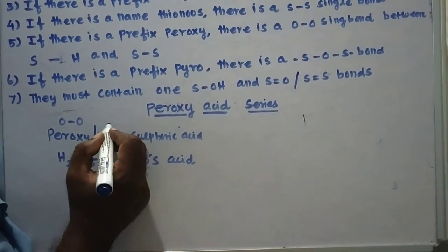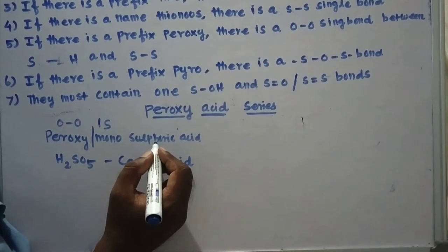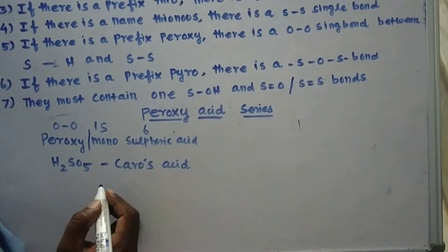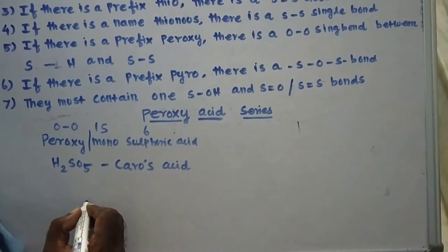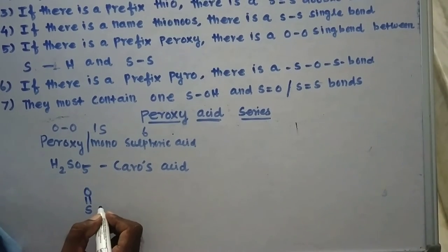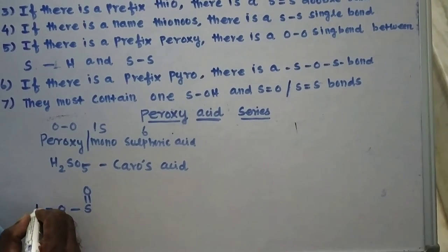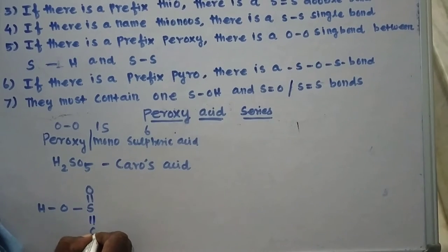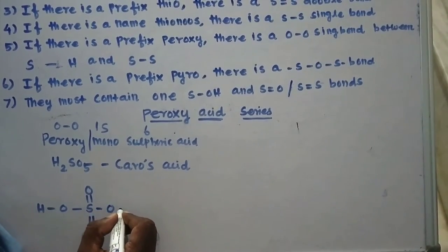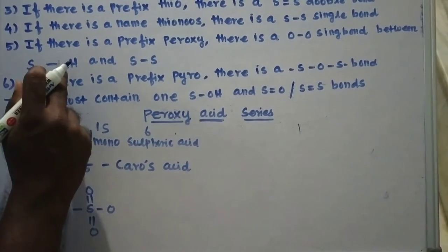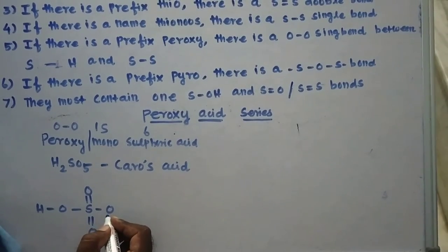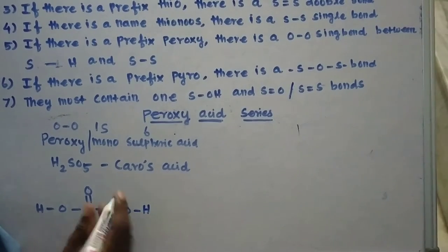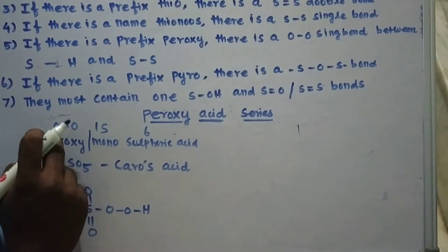For peroxy monosulfuric acid: there is an S=O bond, and there must be an S–OH bond. The remaining are one hydrogen and three oxygen atoms. There is another double bond O. Since peroxy creates an O–O bond between sulfur and hydrogen (only one sulfur atom is present), there must be an O–O single bond with an O–H group attached. This is the structure of peroxy monosulfuric acid: S=O, S=O, S–O–O–H, and S–OH.